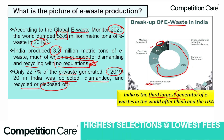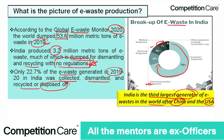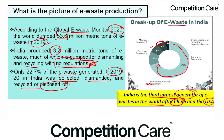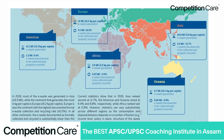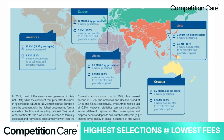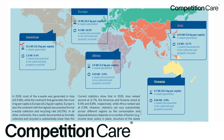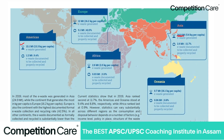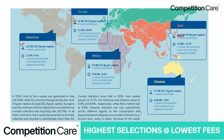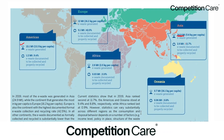India is the third largest generator of e-waste in the world after China and the USA. Europe generates 12 metric tons (16.2 kg per capita), America generates 13.1 metric tons, while Africa generates 2.9 metric tons with only 11.7 percent collected properly. Asia generates 24.9 metric tons total.